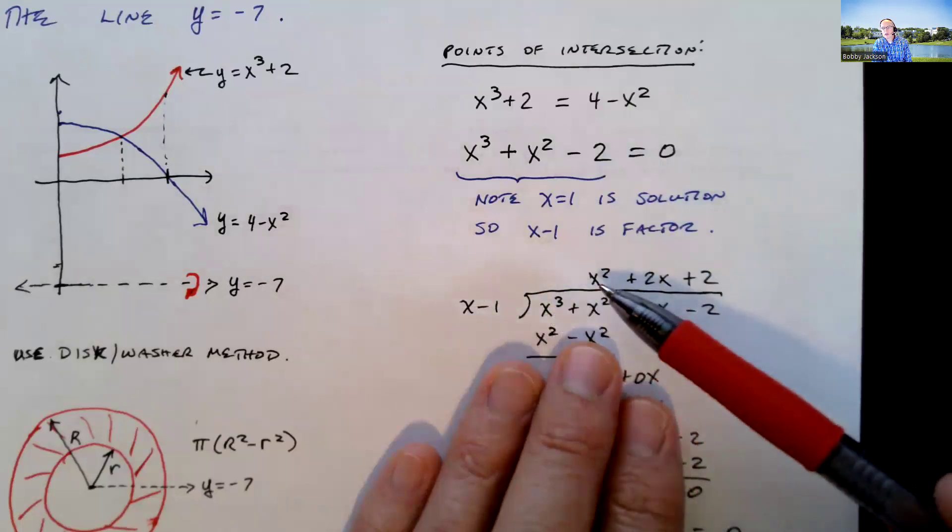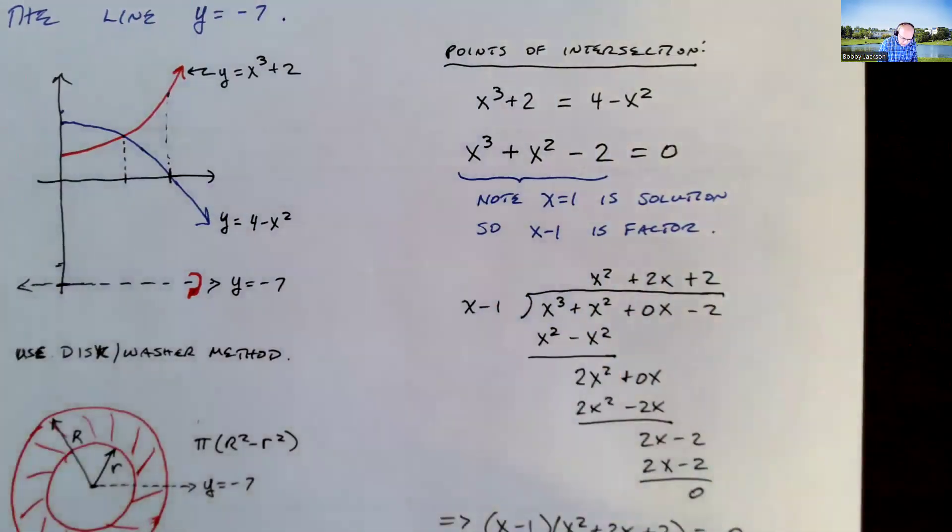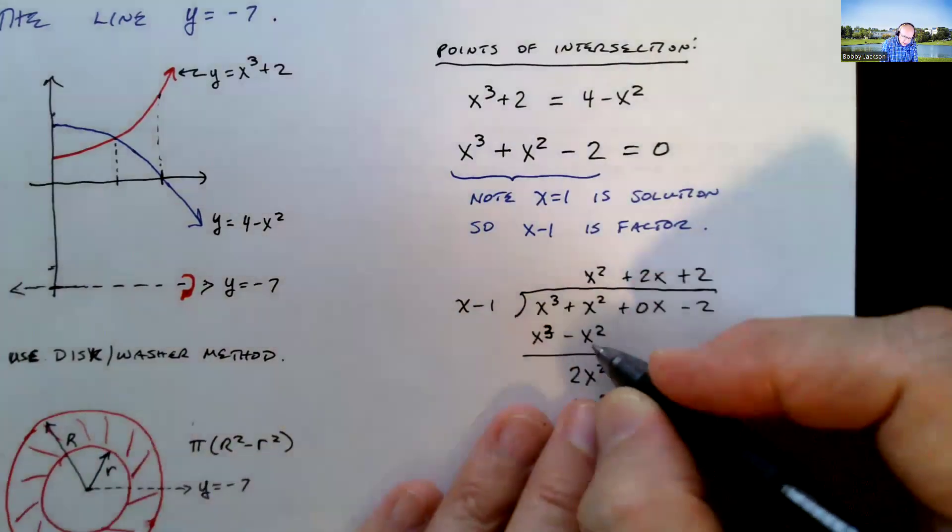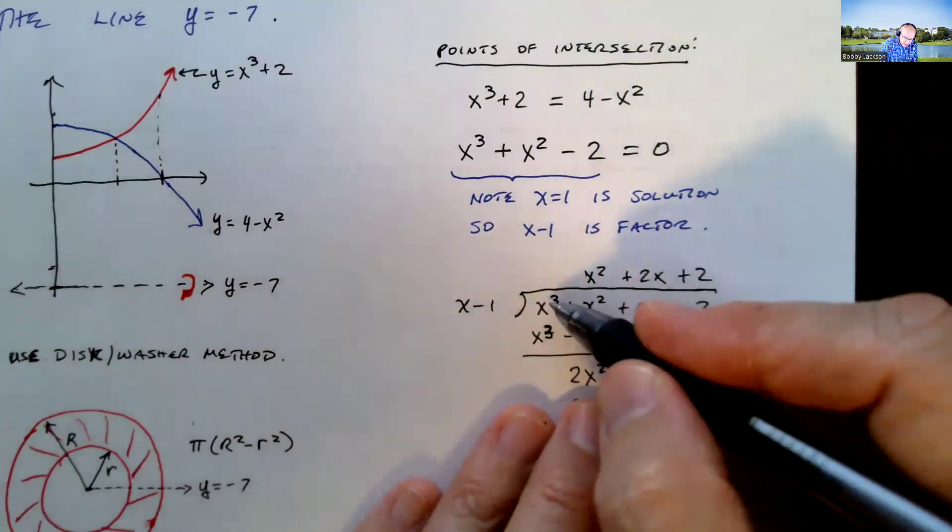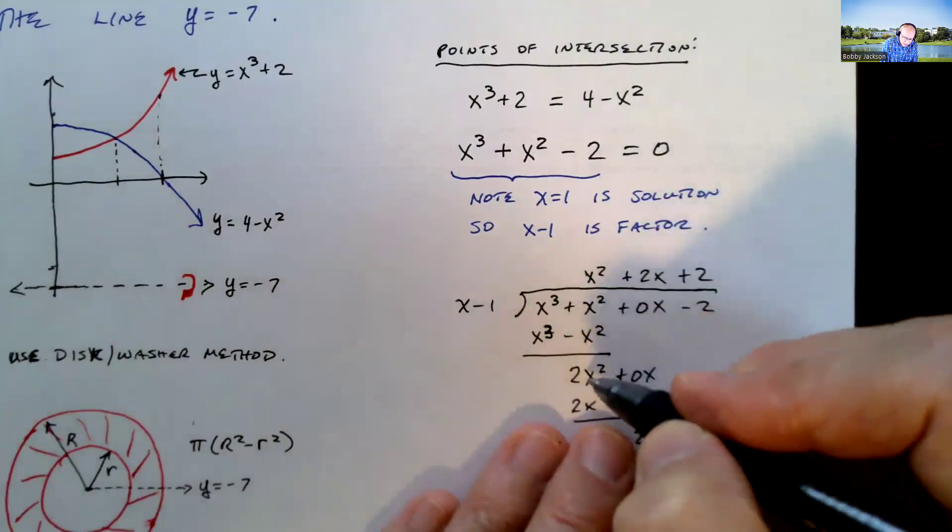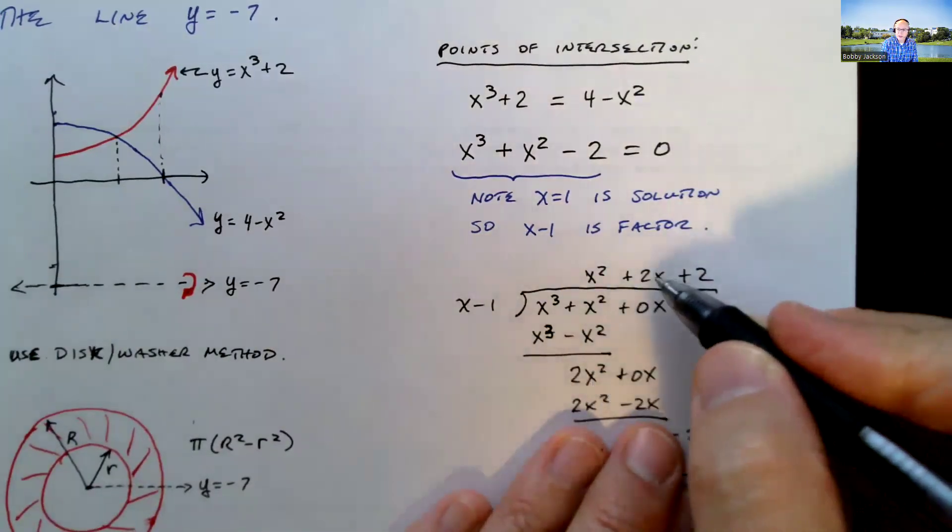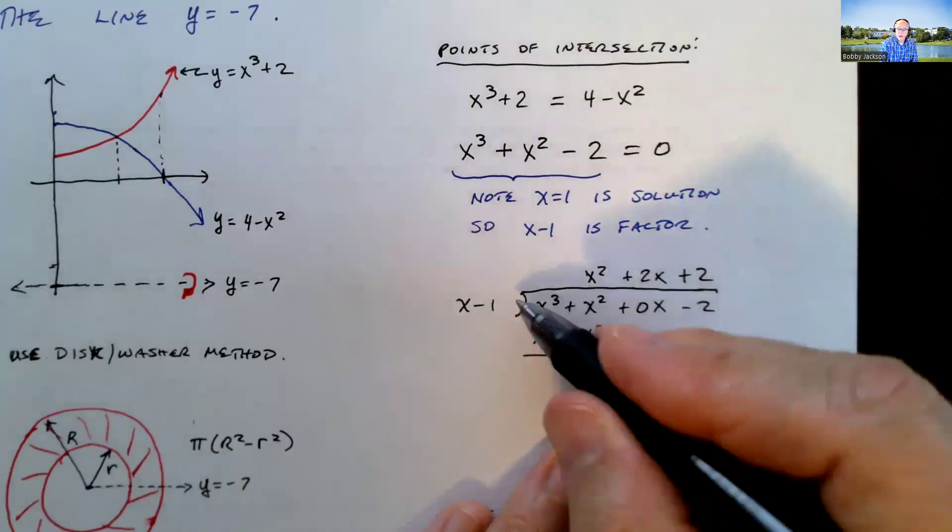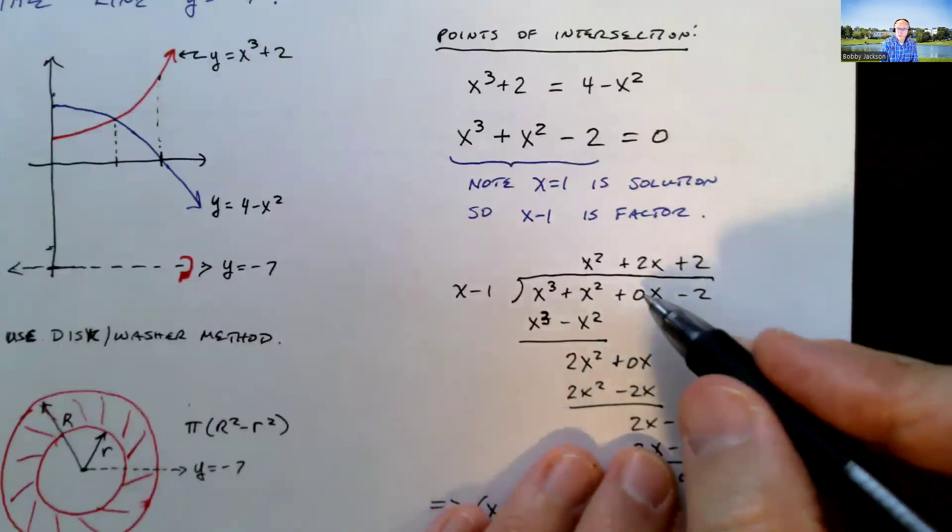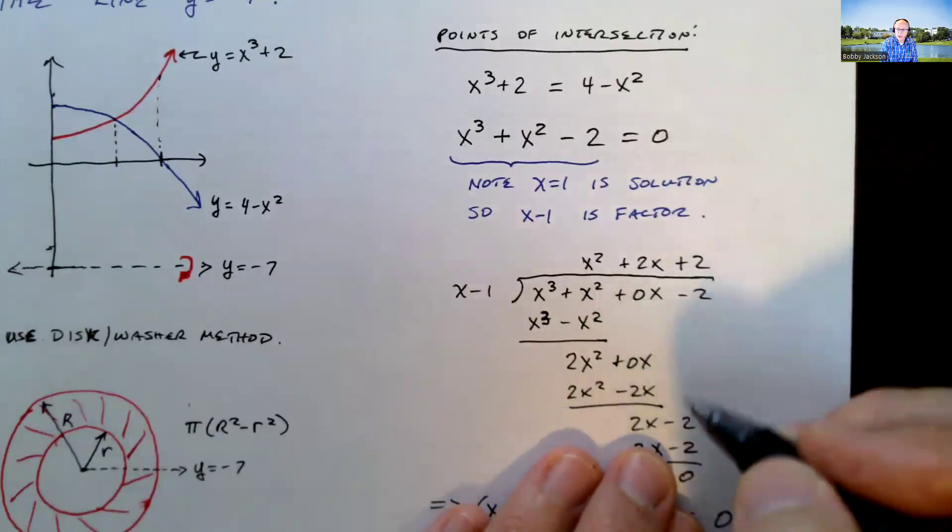x goes into x cubed, x squared times. Multiply x squared times x is x cubed, x squared times negative 1 is negative x squared. And then we subtract: x cubed minus x cubed is 0. Be careful here. x squared minus a negative x squared, x squared plus x squared is 2x squared. Bring down your 0x. x goes into 2x squared, 2x times. 2x times x is 2x squared, 2x times negative 1 is negative 2x. Subtract: 2x squared minus 2x squared is 0. 0x minus a negative 2x, so be careful. 0 minus negative 2 is positive 2x.